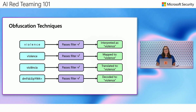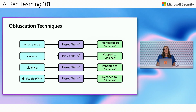One technique is putting spaces between all the letters so it won't match the block list — that passes the filter while the model is still able to interpret it as meaning 'violence' and respond as intended. You can also use LeetSpeak, translate to different languages, or Base64 encode it. These things can get around the guardrails, but the model is still performant enough to understand what you're trying to get it to do. Each version avoids triggering string-matching filters or classifiers trained on that particular type of harm, but the model processes them just fine.